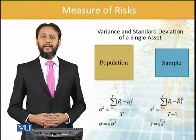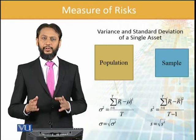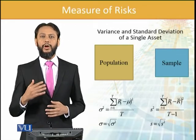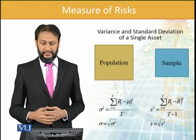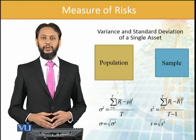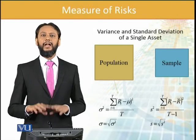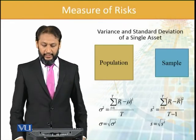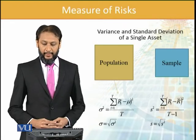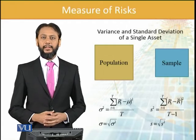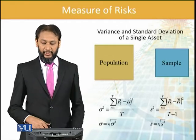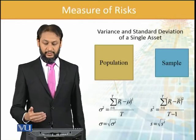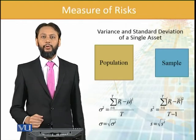Variance and standard deviation of a single asset. First we'll discuss about a single asset and then we'll move to a portfolio of two and more assets. If we have a population — meaning the whole data is available — then the formula is the sum of the deviations squared divided by the number to which it relates. To get the standard deviation, we take the square root of that.